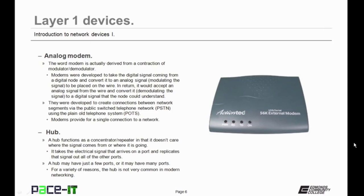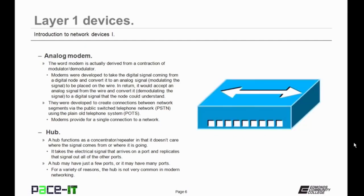A modem doesn't care where the signal comes from — it just does its job. Then there's the hub. A hub functions as a concentrator or repeater, in that it doesn't care where the signal comes from or where the signal is going. It takes an electrical signal that arrives on a port and replicates that signal out all of its other ports.